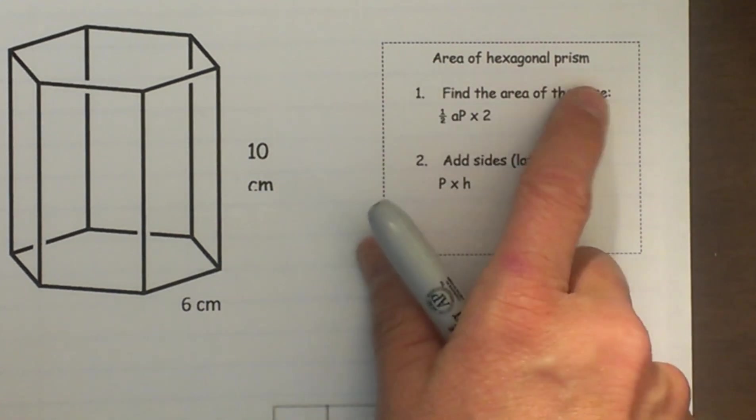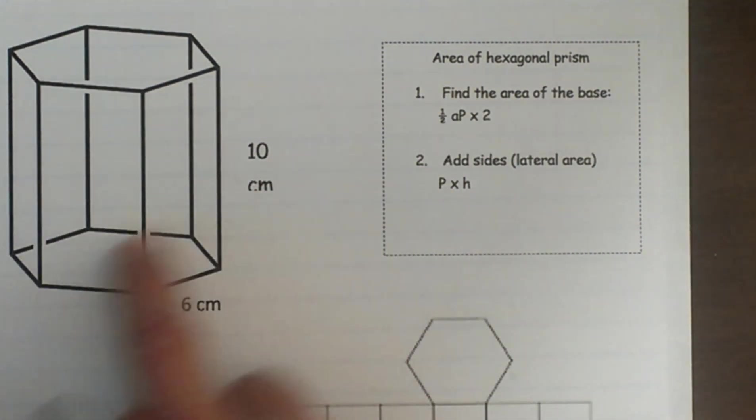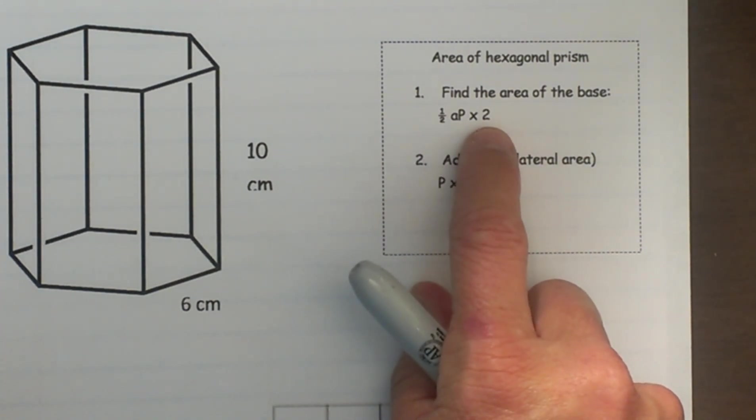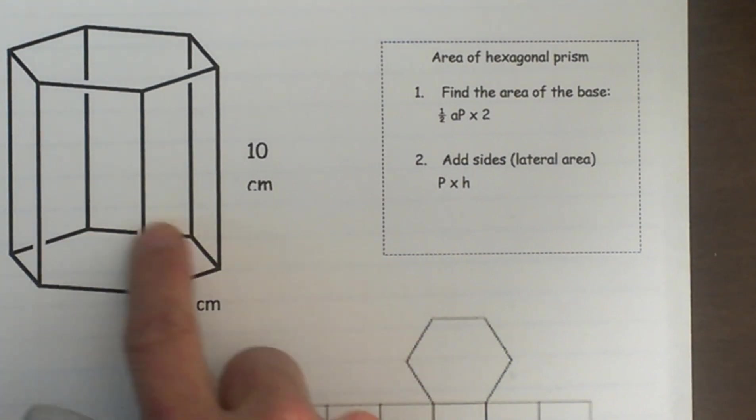To find the area of this hexagonal prism we have to find the area of the two bases. One half AP is our formula to find the area of the base where A is apothem and P is perimeter. We are going to multiply that by two. Why are we multiplying by two? Because we have two of these.